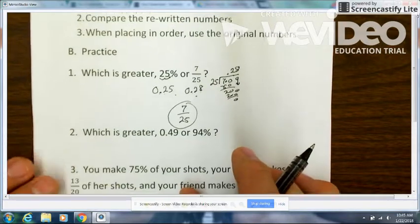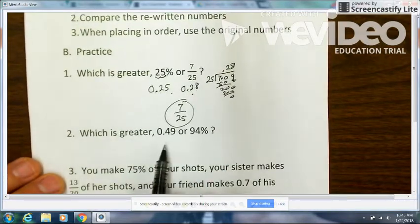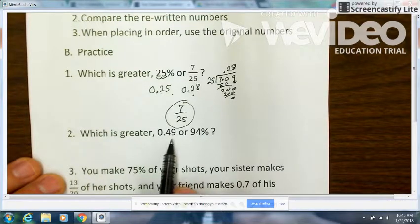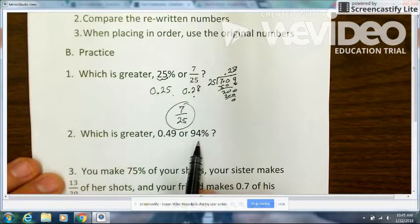Another example, example number two: which is greater, a decimal of 0.49 (or 49 hundredths) or 94 percent?